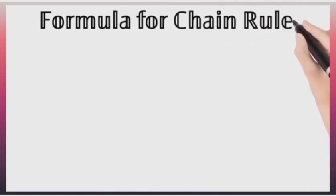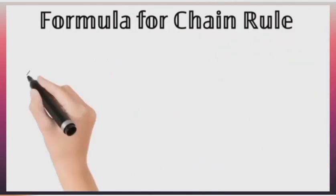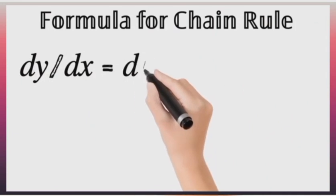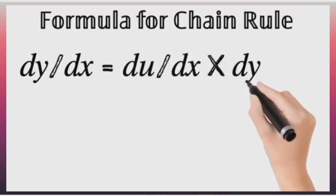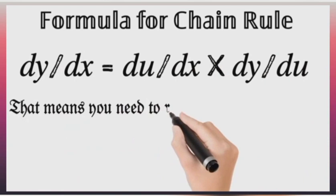we have, to find dy/dx, we are going to have du/dx times dy/du. This means that we need to find, replace a particular entity with u in order for us to get our du/dx.